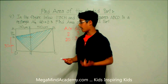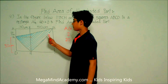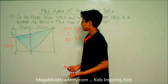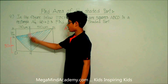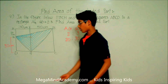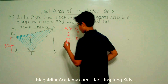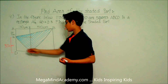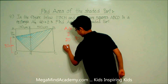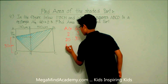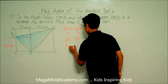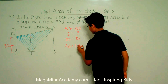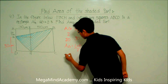Now we need to find the area of the shaded portion. To find the area of the shaded portion, we need to first find the areas of the unshaded portions. We can see that all of the unshaded portions are triangles. The area of a triangle is equal to length times height divided by 2.